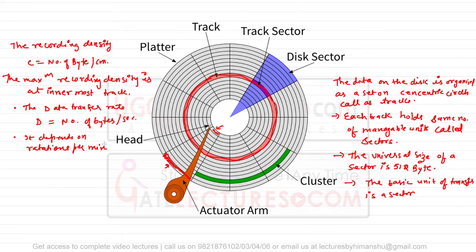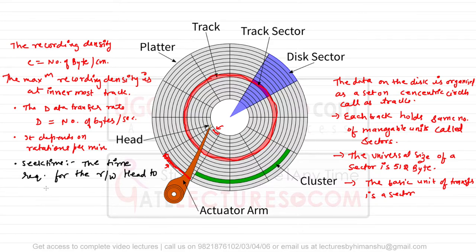The first timing term we'll use is seek time. The seek time is the time required for the read/write head to come to the desired track. We denote the seek time with the term t_s. Another way to define it: seek time is the amount of time taken to move the read/write head from its current position to the desired track.